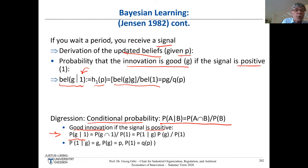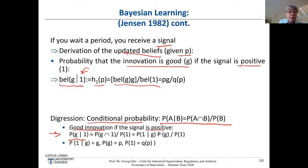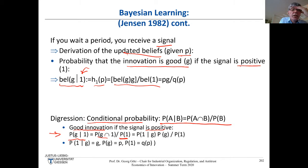The probability of a good innovation given a positive signal equals the probability of a good innovation AND receiving a positive signal, divided by the probability of receiving that signal P1. We can rearrange: the probability of receiving a high signal given a good innovation, times the probability of a good innovation, divided by P1.